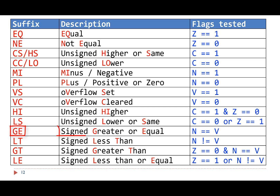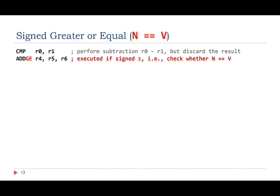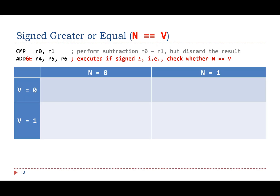To test the condition GE (signed greater than or equal to), the processor checks whether the negative flag N and the overflow flag V are equal. If they are equal, the GE condition is satisfied. In this short example, ADDGE is executed only if the signed integer in register R0 is greater than or equal to the one in register R1. The CMP instruction performs subtraction and updates the NGCV flags. Since we are comparing two signed integers, we should pay attention to the overflow flag rather than the carry flag. Let me explain why the result is signed greater than or equal to when overflow flag V equals the negative flag N.